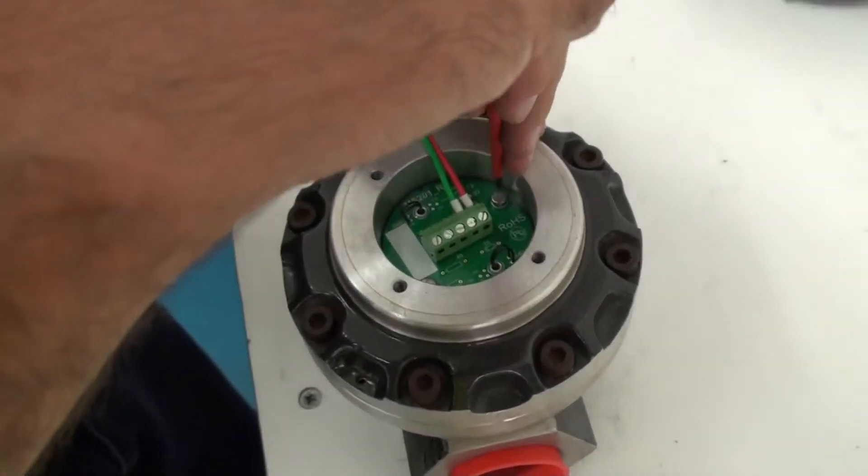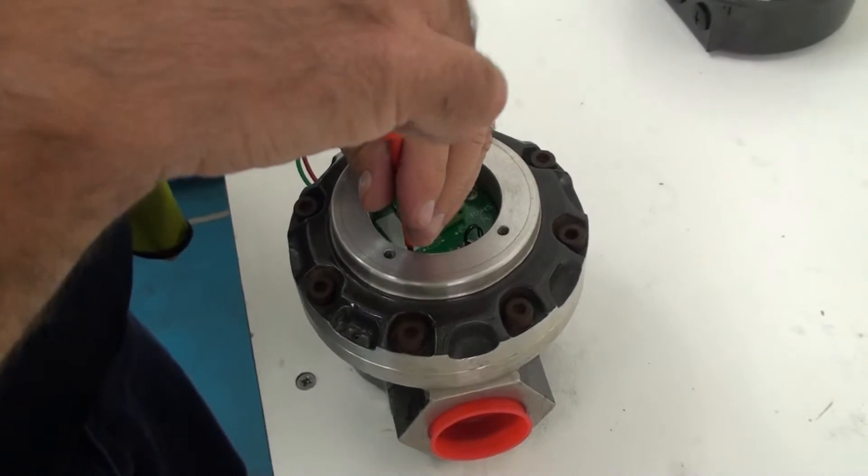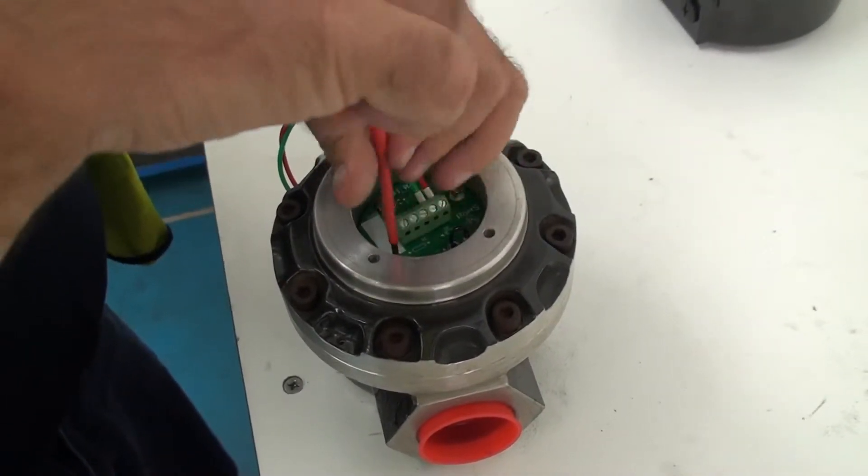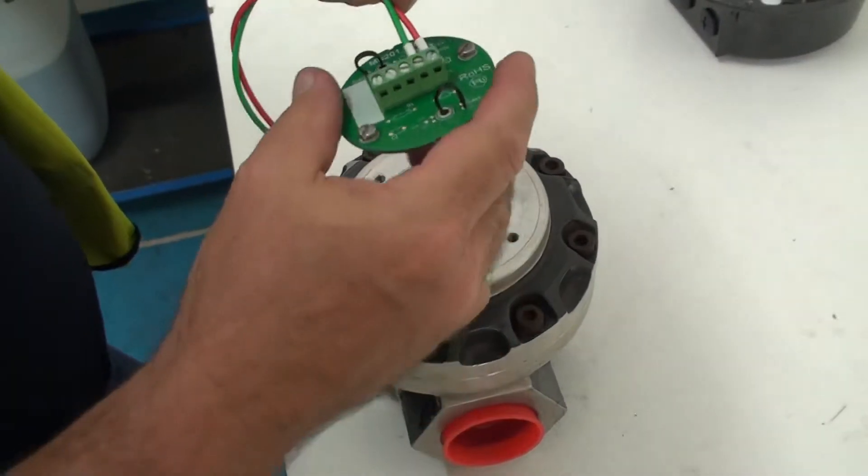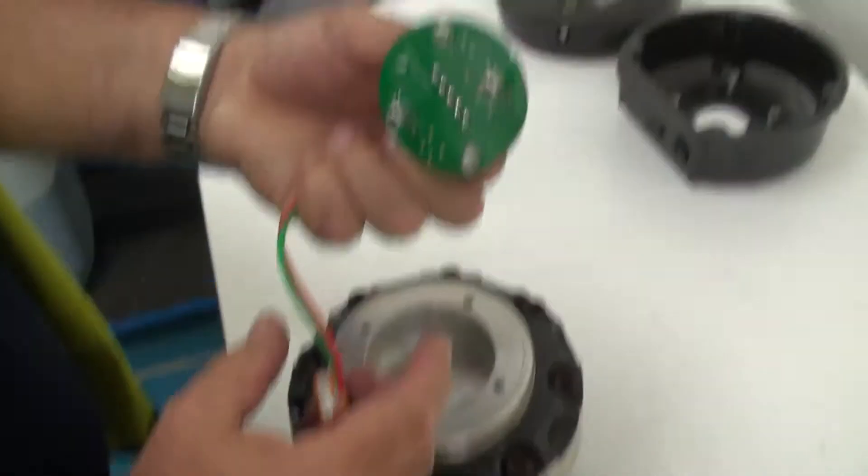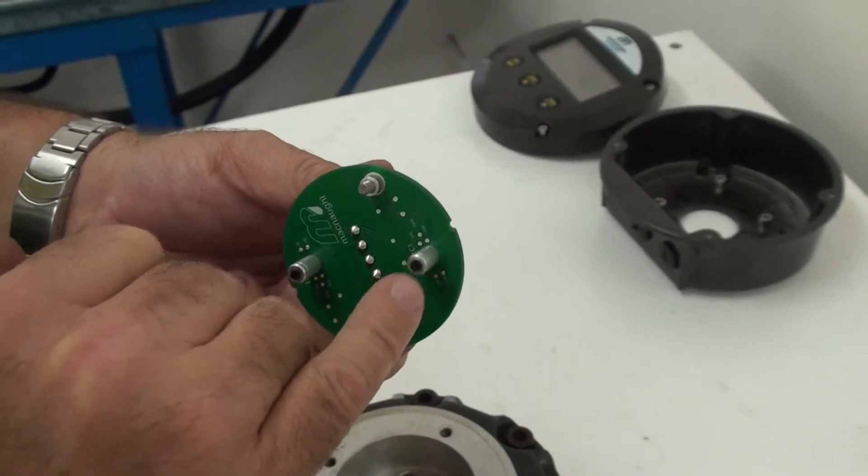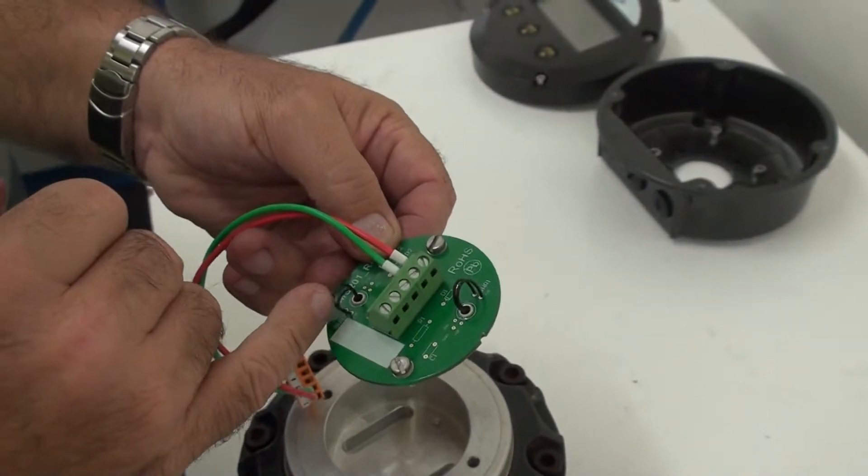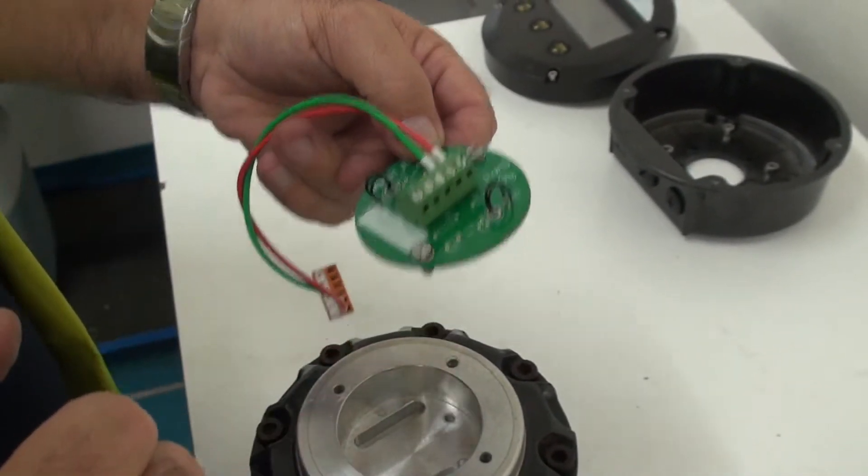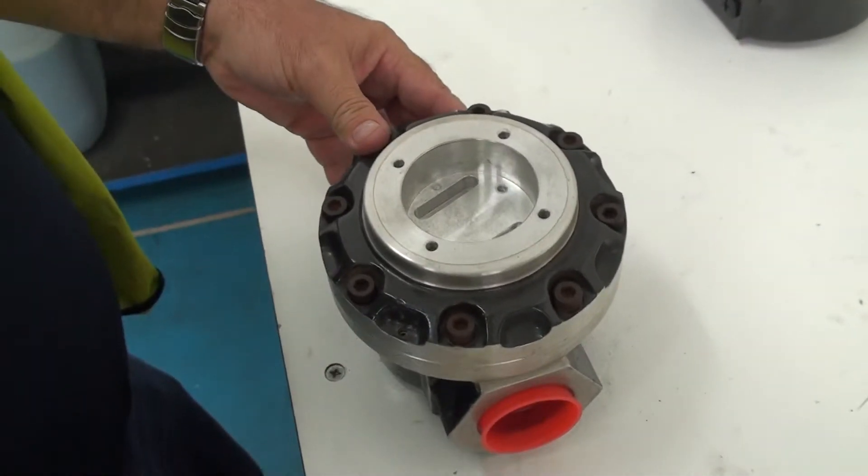So what we'll do is we undo the two screws that hold this pulse board onto the flow meter and this will allow us to remove that pulse board out of the flow meter. Now if I turn it over you can see the little reed switches here in the little aluminum standoffs. So this board is a dual reed because it has two sets of little wires. I'll put that out on the bench and out the way.